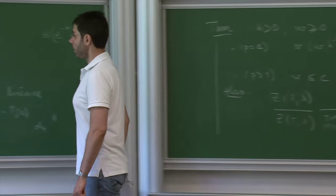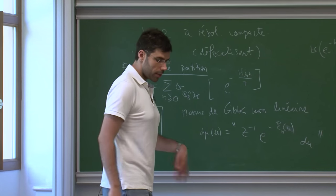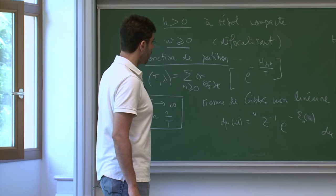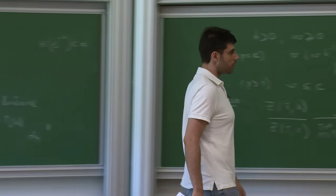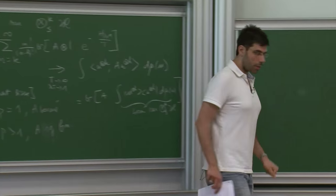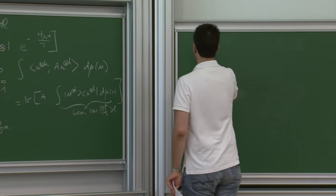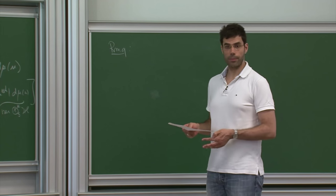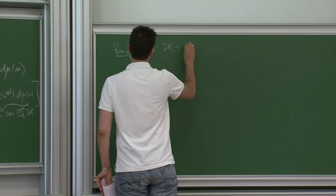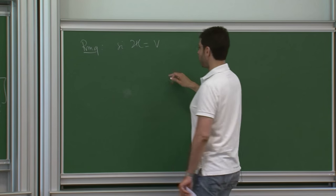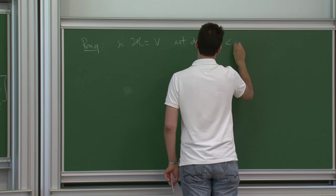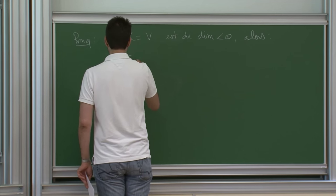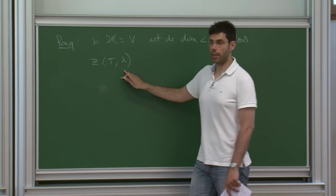Résumé : on démarre d'un problème quantique à n corps dans une limite de champ moyen où le nombre moyen de particules est très grand et le couplage est d'ordre 1/T. L'état de Gibbs quantique converge, d'une manière qui est en fait une limite semi-classique, vers l'état de Gibbs non linéaire — la mesure de Gibbs μ. C'est ce qu'il faut démontrer.